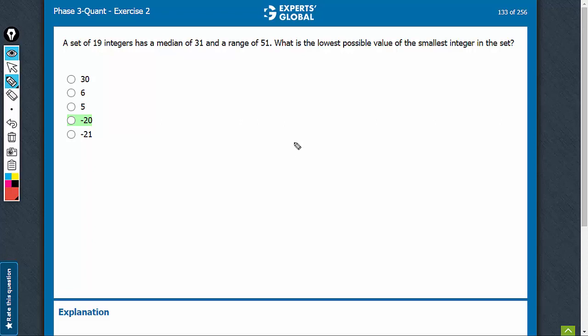A set of 19 integers has a median of 31. That means when the terms are put in increasing order, the tenth term has a value of 31.